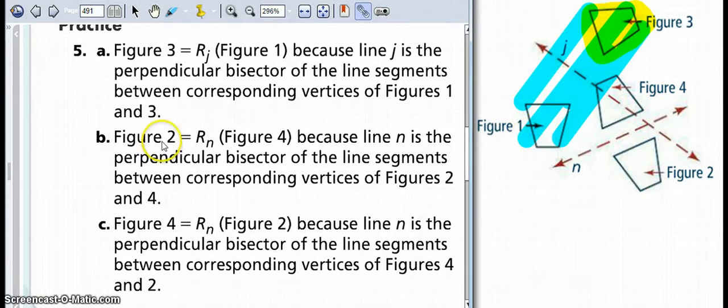Same thing for figure two. We see that n is directly between two and four. So that would create a perpendicular bisector as well as figures four and two at the end, just relating four to two, just like I related two to four.